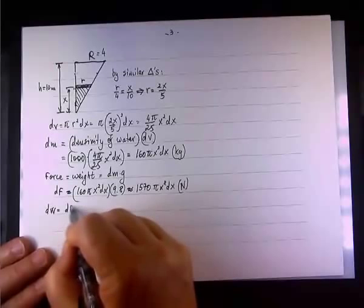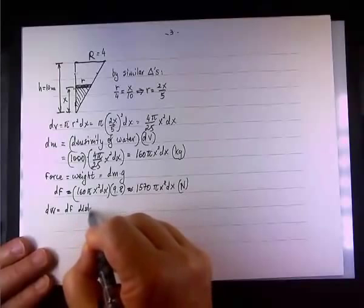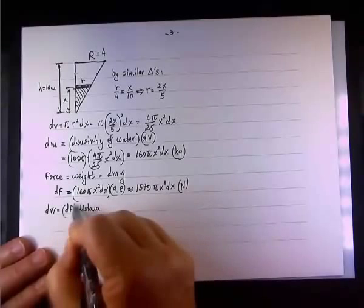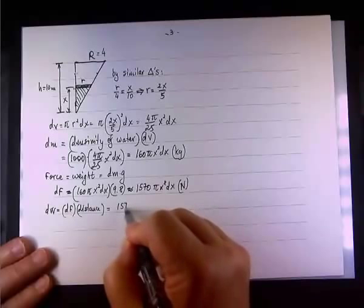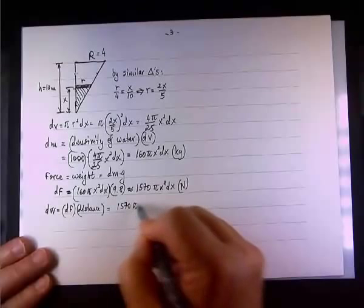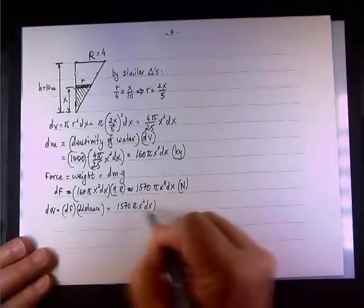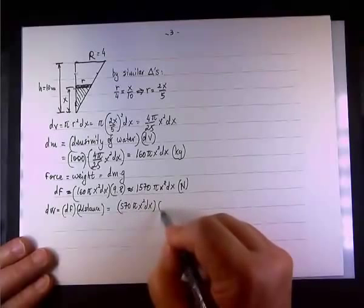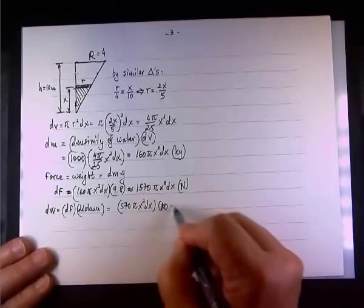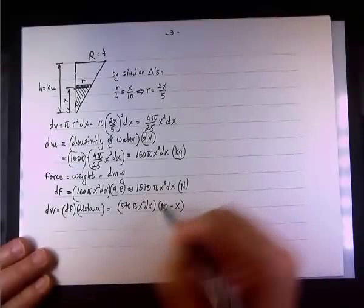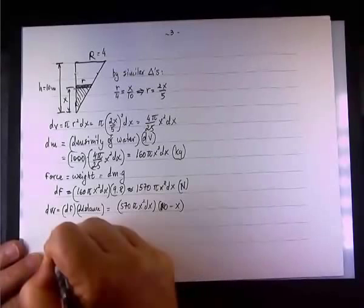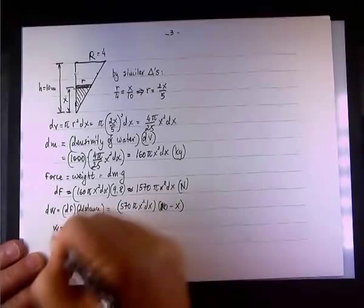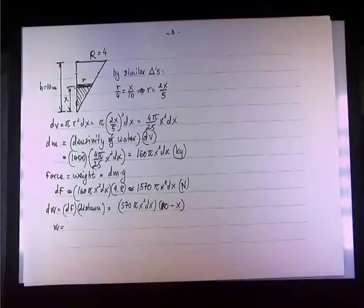An element of the work will be, this is by the way, df. So, df. So, df, element of force, equal this much. So, dw will be df times the distance. df is 1570 pi x squared dx. And then the distance is 10 minus x.